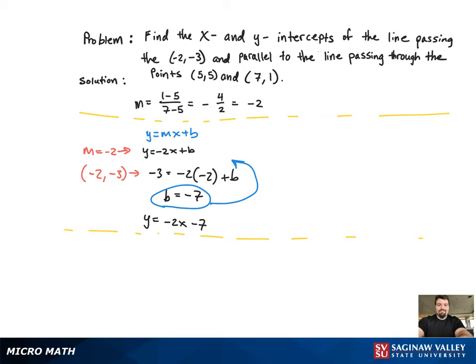Now, with that equation, we can go ahead and find the x and y-intercepts. The y-intercept is what b stands for. So since b is equal to negative 7, the y-intercept is negative 7.